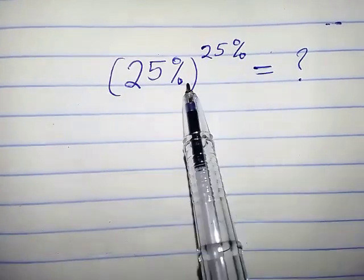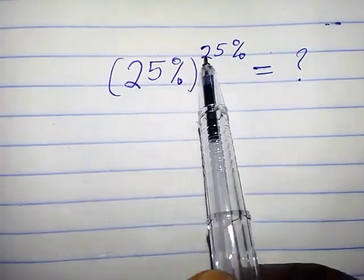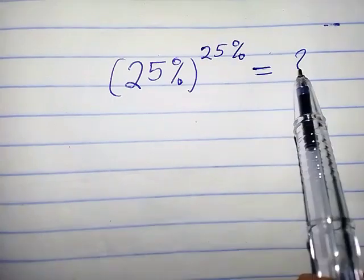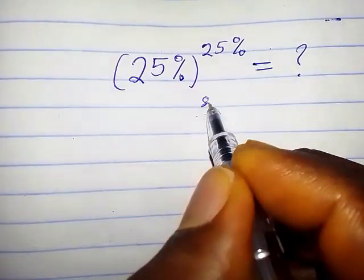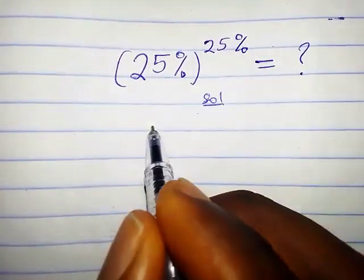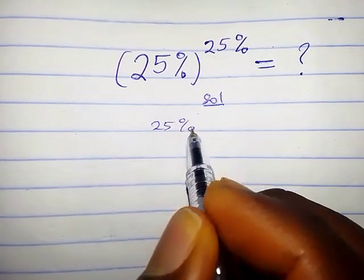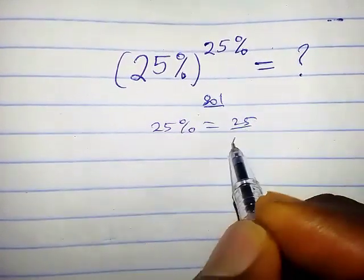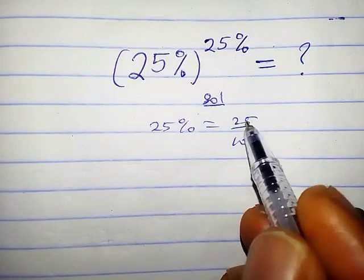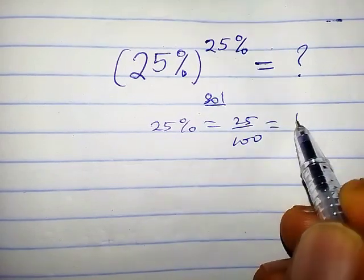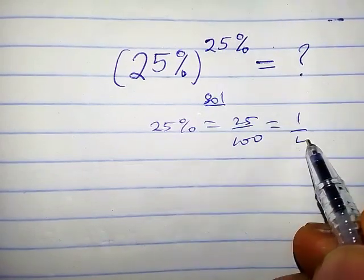How do we undo this exponent with percentage? We have 25 percent raised by 25 percent equals what? Solution: We can write 25 percent as 25 over 100. So let's break this down. 25 in 25, that is 1. 25 in 100, that is 4.